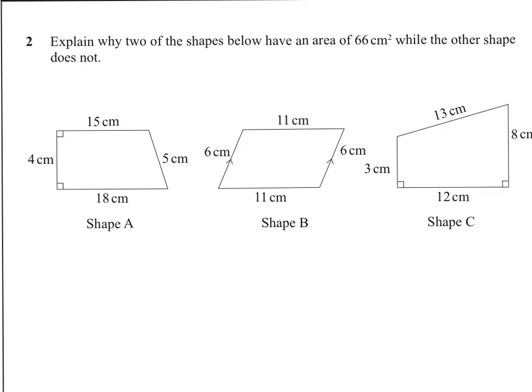Explain in math means do the sums. So the first shape we have is a trapezium, and you can get the formula for that in the formula sheet. But it's half the sum of the parallel sides times the distance between. So that's a half times 33 times 4. Half of 4 is 2, and 2 times 33 is 66.